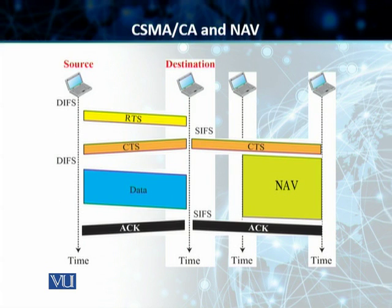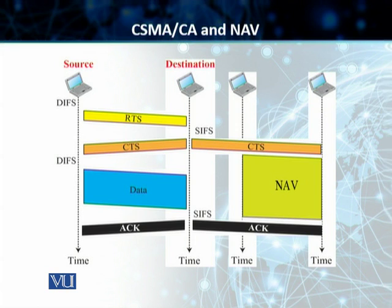On this slide, we have a frame exchange timeline to show how the Distributed Coordination Function, which uses CSMA/CA — carrier sense multiple access with collision avoidance — as the access method, actually works. What happens at the start is the source uses a persistent strategy with back-off until the channel is idle.